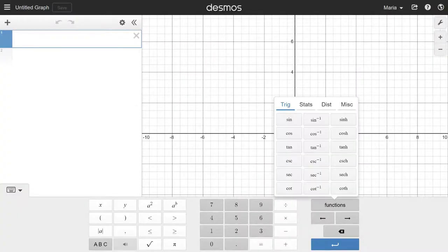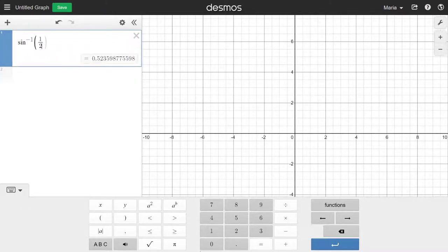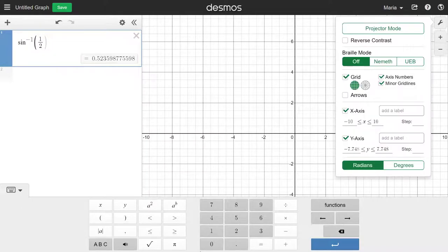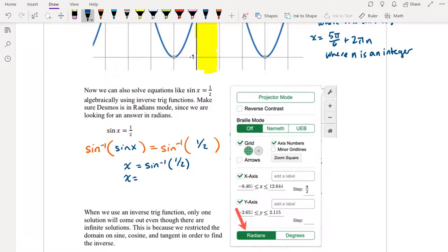We're going to go ahead and put in inverse sine from the functions menu of 1 half. Now right now Desmos tells me that the inverse sine of 1 half is 0.523598. I'm going to go into the wrench menu here and I can see that my calculator is currently set for radians. So this 0.5236 answer is the answer in radians. It is also the value pi over 6 because the sine of pi over 6 is 1 half. And if you go ahead and do pi divided by 6 in Desmos, you'll see it's 0.5236.